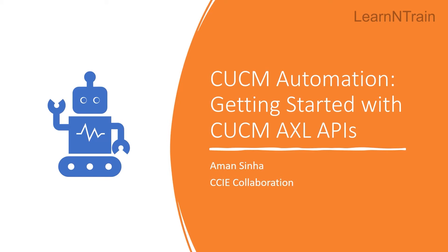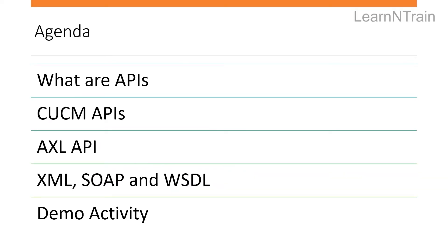Hello friends, welcome to today's session on automation in Cisco Unified Communications Manager. Today's session is going to be very useful for someone who knows CUCM but is a beginner in automation. Today we are going to talk about what are APIs, what are some of the APIs available in CUCM, what are AXL APIs in CUCM. We will look into XML, SOAP and WSDL which are used in AXL API. At the end of the session we will also show a demo of using AXL APIs to fetch some of the data from CUCM.